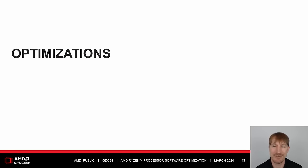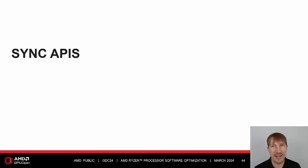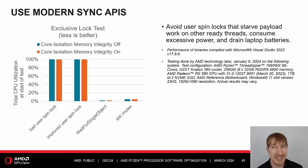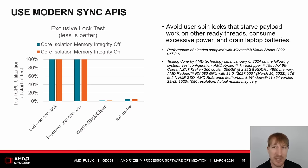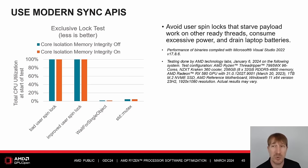Optimizations. Sync APIs. Avoid user spin locks that starve payload work on other ready threads, consume excessive power, and drain laptop batteries. User spin locks may waste CPU time since the OS scheduler cannot determine if it should yield to another program thread or continue to spin. In this exclusive lock test, user spin lock implementations consumed 100% of a Threadripper 96-core 192 logical processor, whereas legacy and modern sync APIs consumed only 5% or less to do the same work.